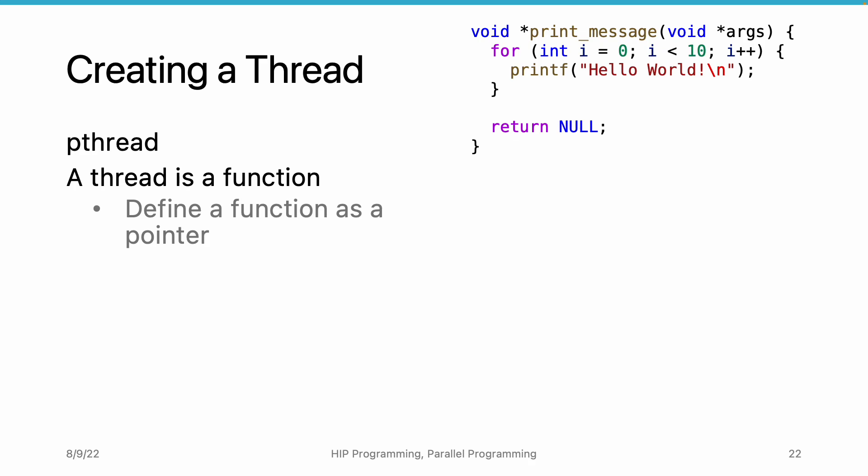To create a thread, the first thing we need to do is to write a function. As you can see from the example on the right, we print hello world 10 times. The function that can be used as the entry point of a thread has some requirements. It must accept one argument of type void star and return one argument of type void star. They are designed to pass in data to the thread and retrieve data from the thread.